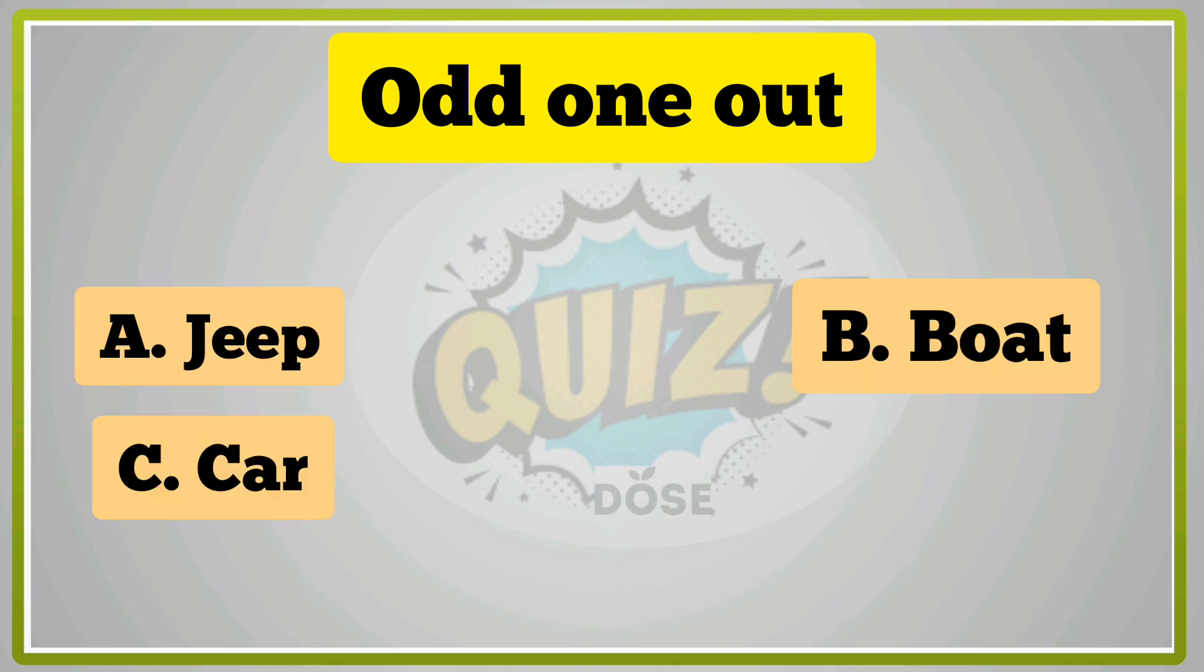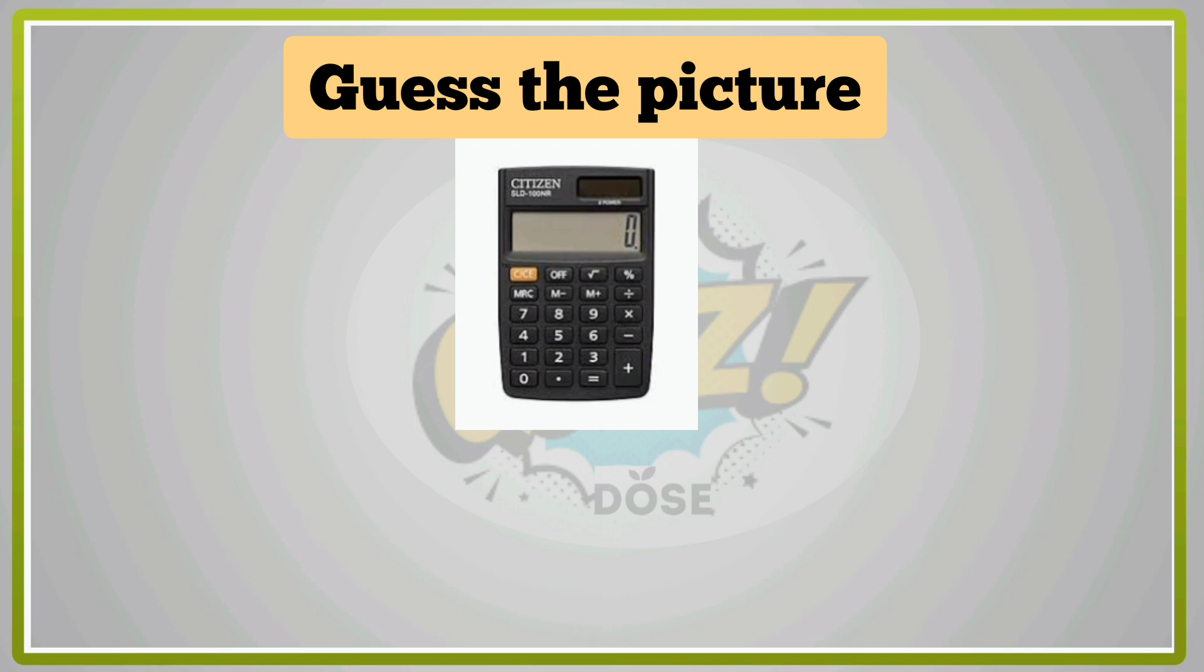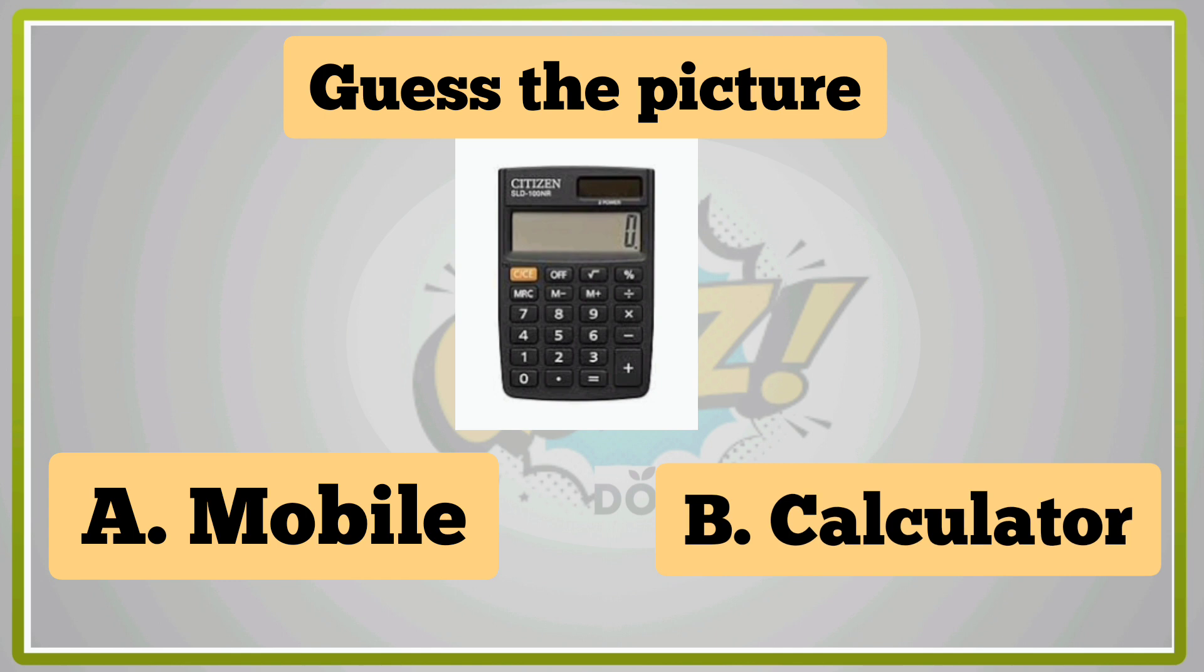A, Jeep. B, Board. C, Car. D, Bike. Odd one out. B, Board. B, Boat. It is right answer. Guess the picture. A, Mobile. B, Calculator. Yes, B, Calculator is right answer.